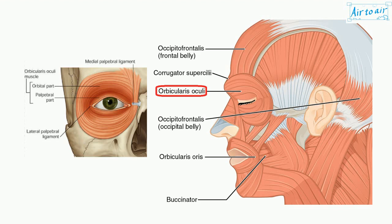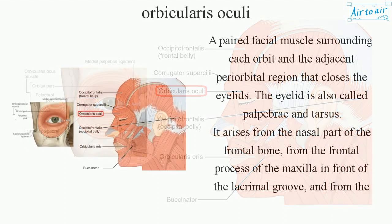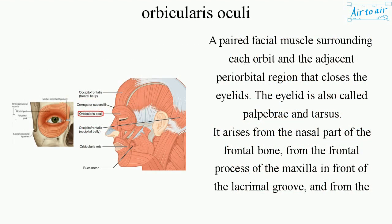Orbicularis Oculi. A paired facial muscle surrounding each orbit in the adjacent periorbital region that closes the eyelids. The eyelid is also called palpebrae and tarsus.